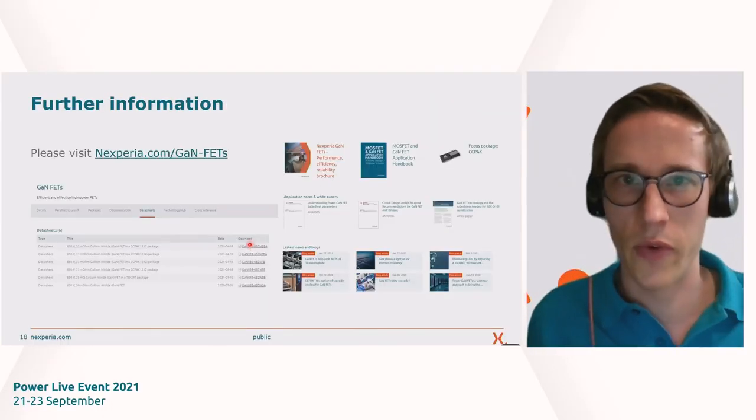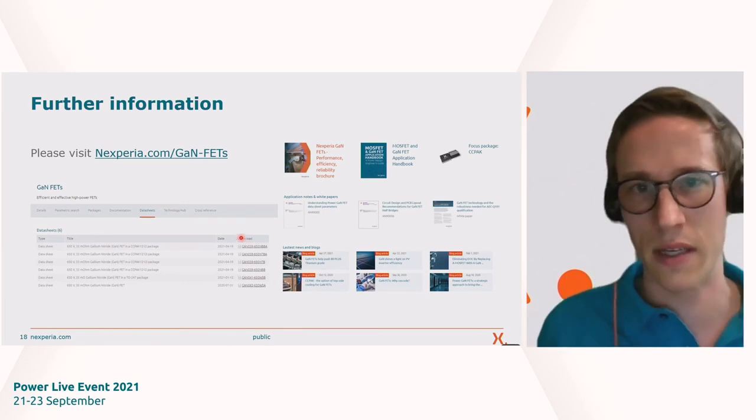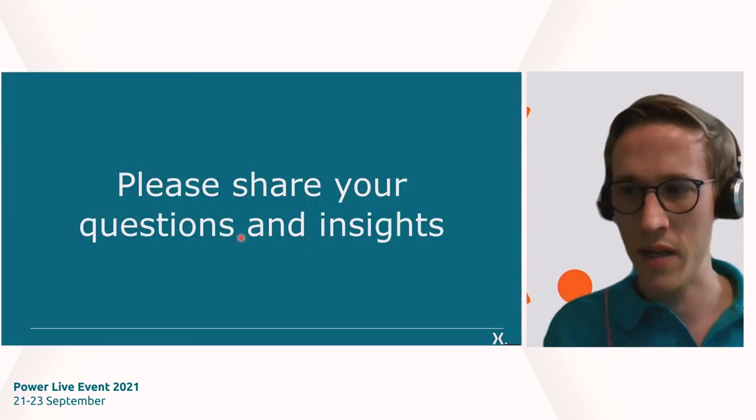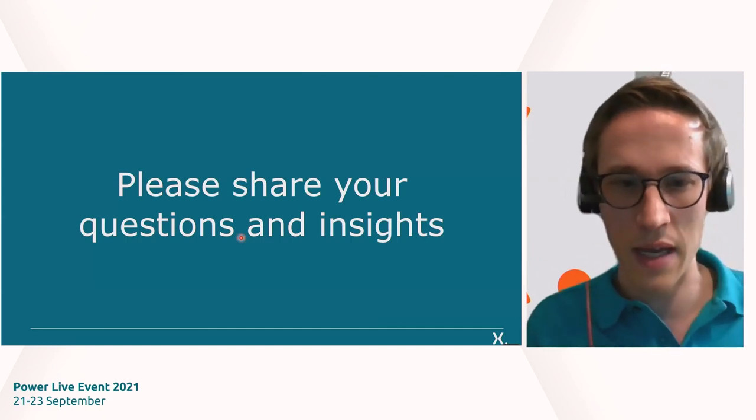With that, I would like to conclude my presentation. You can find further information on the GaN devices at nexperia.com/GANFET. With that, I would like to hand back to the Q&A panel for the Q&A session. Thank you. Thank you, Sebastian. Great presentation. We don't have a lot of time, so let's take one quick question. How high is QRR for the cascode? Well, that depends on the size of the device. For the GAN-39, it's roughly 100 nanocoulombs, so it's very close to the Q-OSS value. The QRR that is introduced by the low-voltage MOSFET is very small, since it's only a 30-volt MOSFET.